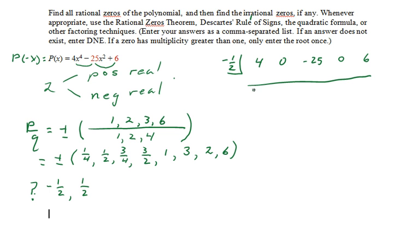4 will be the leading coefficient in the quotient times -1/2 would give us -2. Add 0 gives us -2. Times -1/2 will give us +1. Add -25 will give us -24. Times -1/2 gives +12. Add 0 gives +12, times -1/2 gives -6, and so when we add 6 we do get that -1/2 is a rational zero.